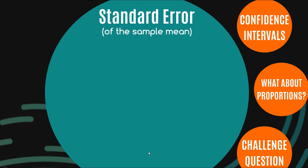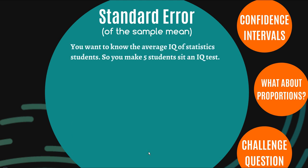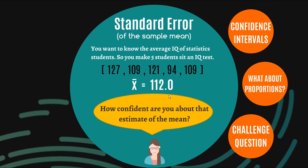Well, let's see if I can develop your intuition as to what this is about. Let's just say you want to know the average IQ of statistics students. So let's say you make five students sit an IQ test. That's a small sample, right? So here are those five students and their IQs. The highest IQ was 127, the lowest was 94. So of course we can take an average of these five numbers and we get 112.0. Easy so far.